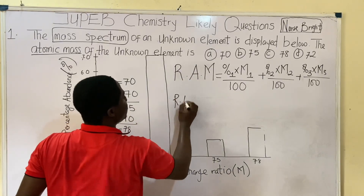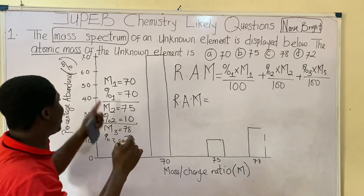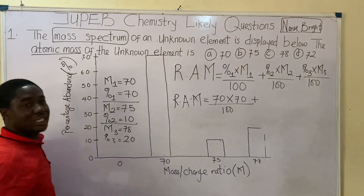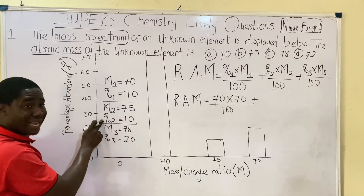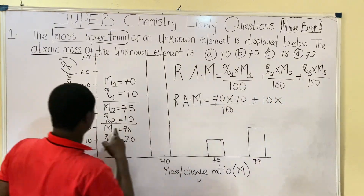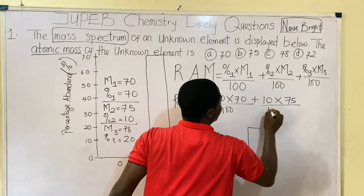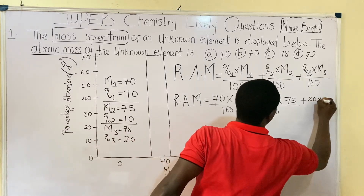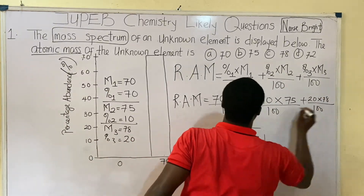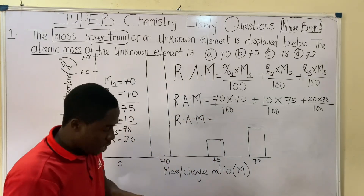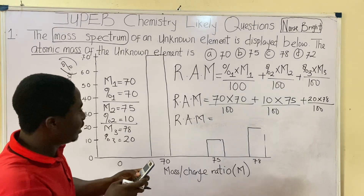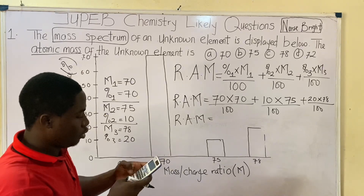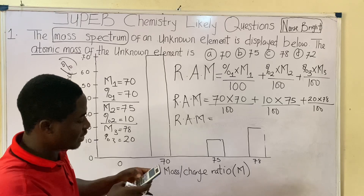Let's substitute all values into the formula. Relative atomic mass = (70 × 70) / 100 + (10 × 75) / 100 + (20 × 78) / 100. Calculating everything: (70 × 70)/100 + (10 × 75)/100 + (20 × 78)/100.